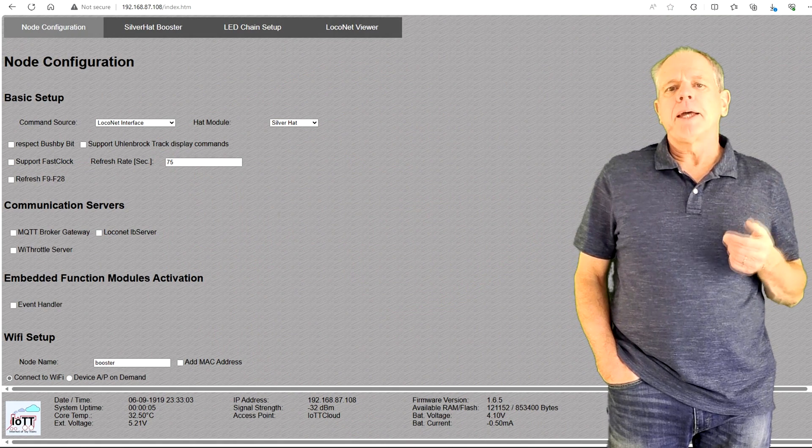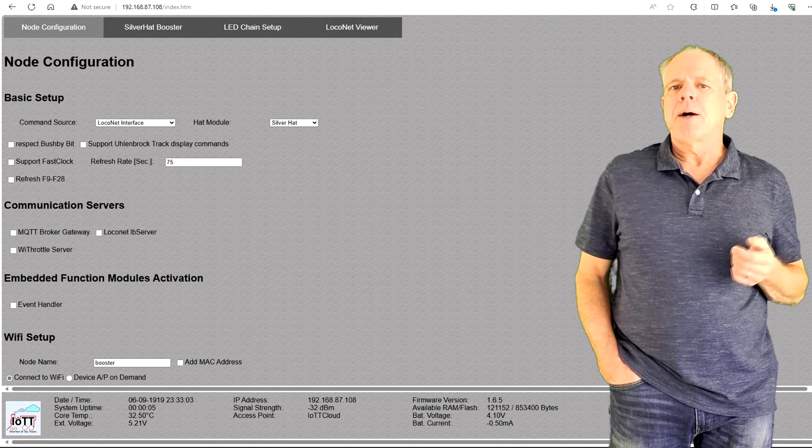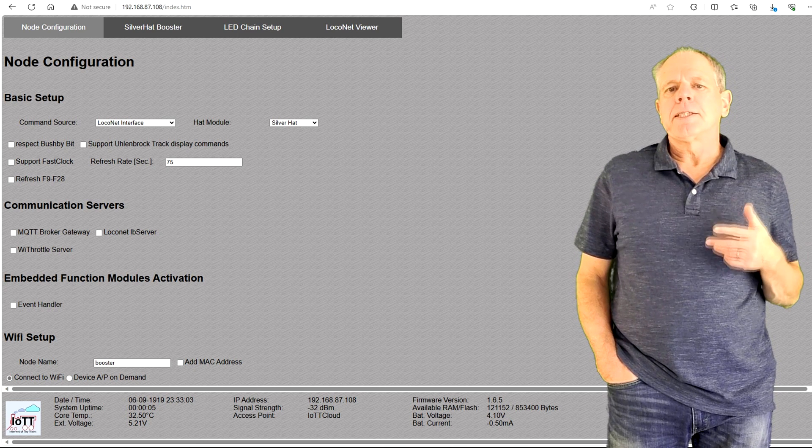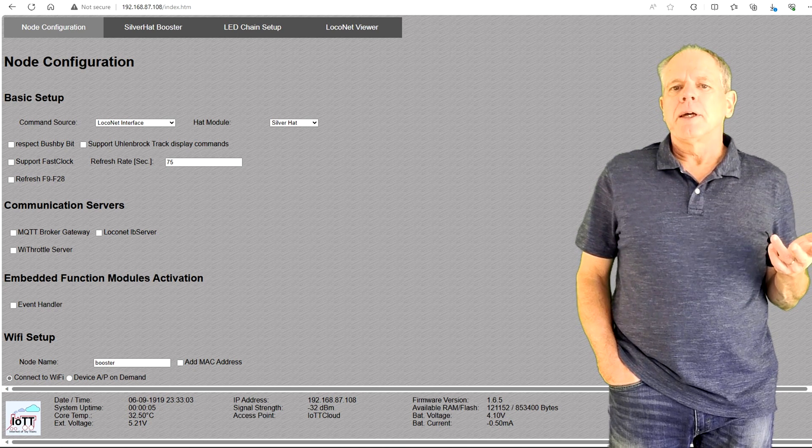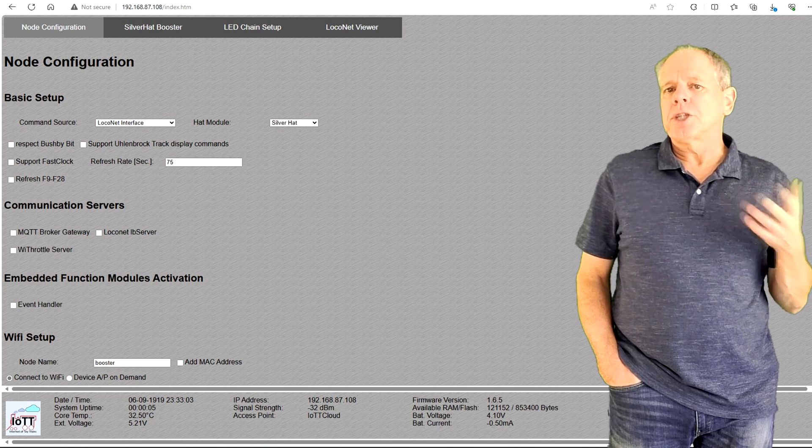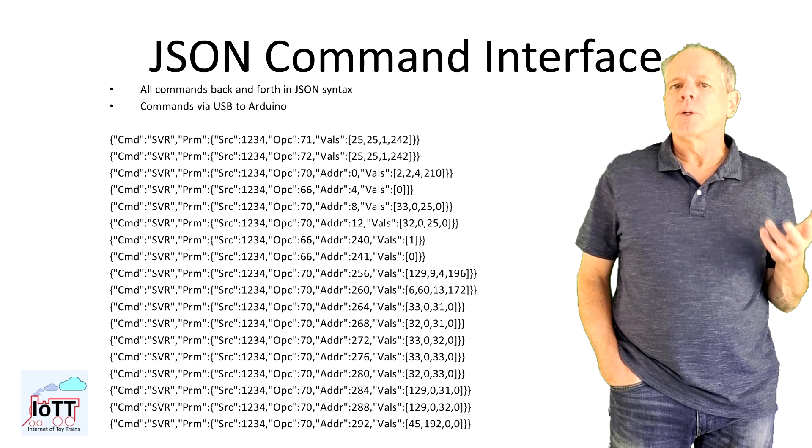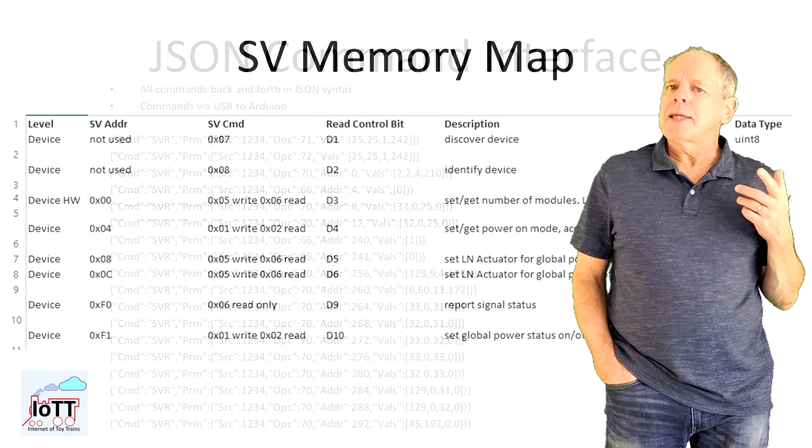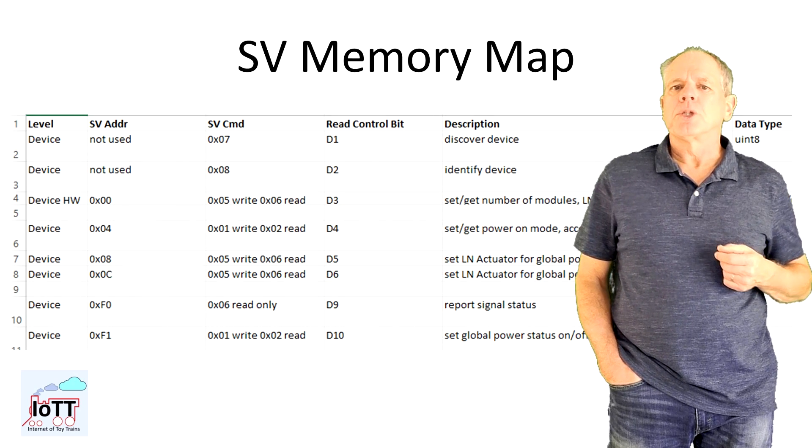Then, I load the IP address of the stick in a web browser to configure the booster. The web interface is the easiest way to configure, but the booster also supports JSON commands via the serial port of the Arduino, or Lockonet SV commands, but that again is a topic for a future video.